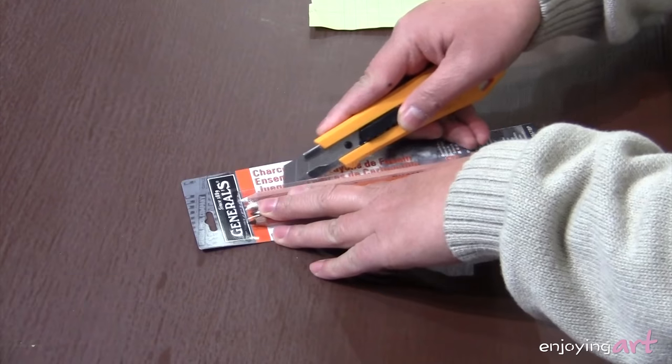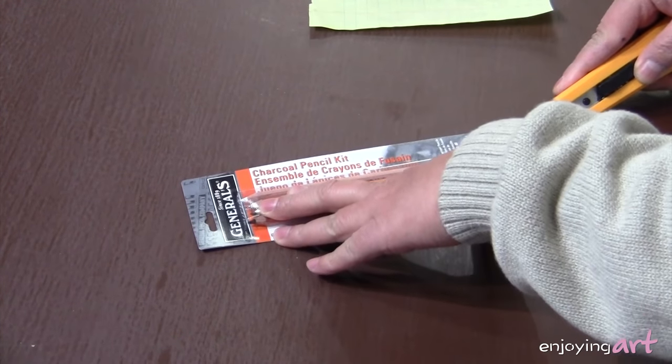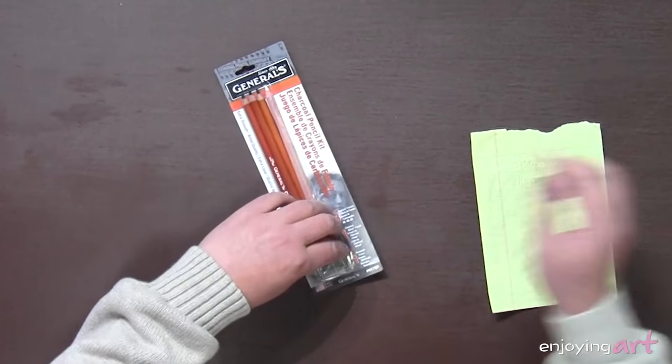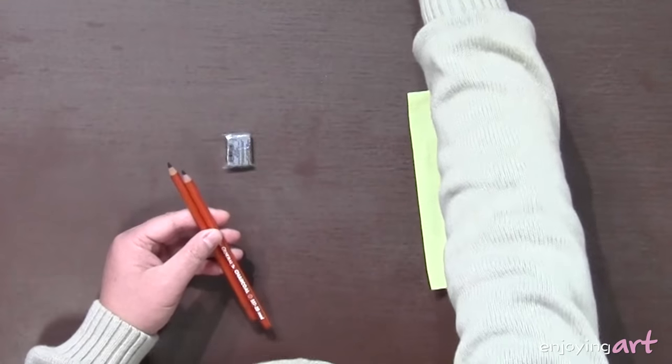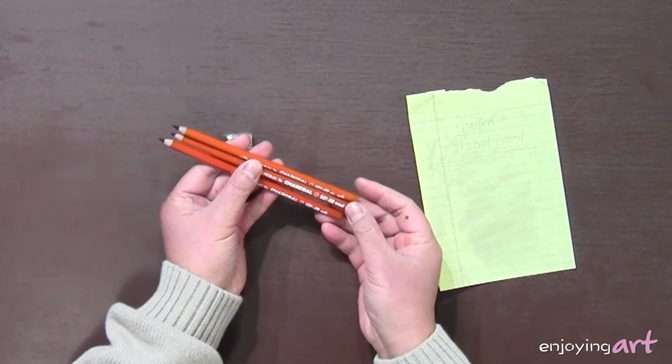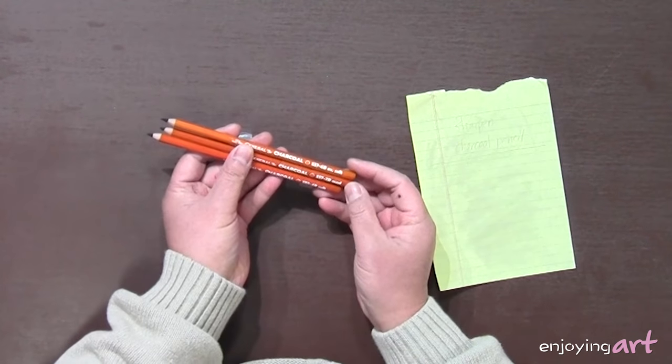Let's open the package. Let's put the white charcoal on the side. One is soft, one is extra soft, and one is medium.